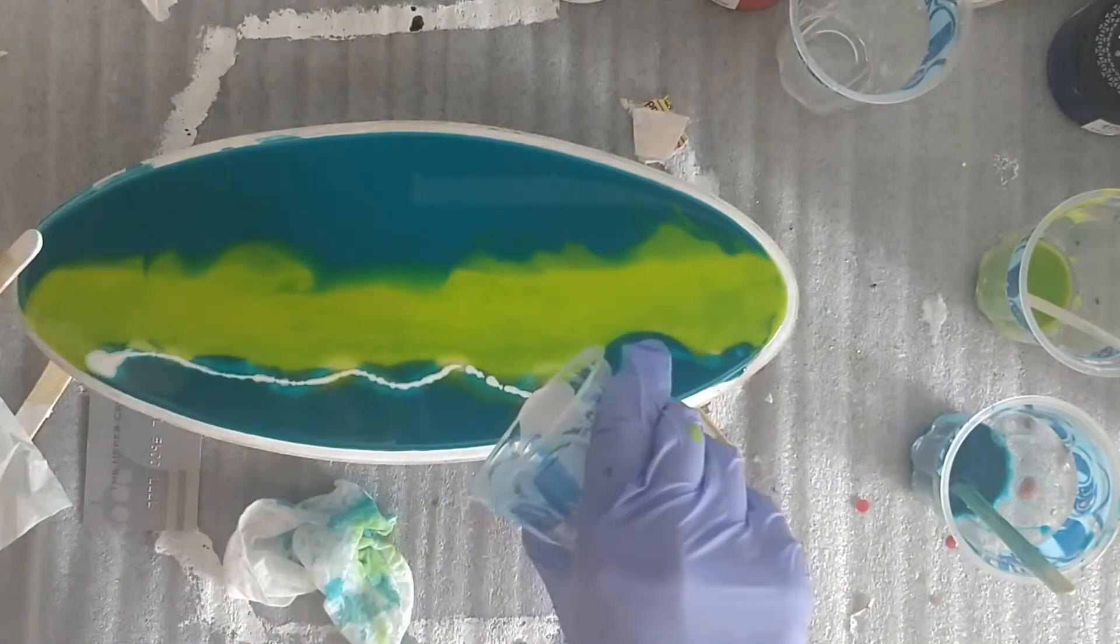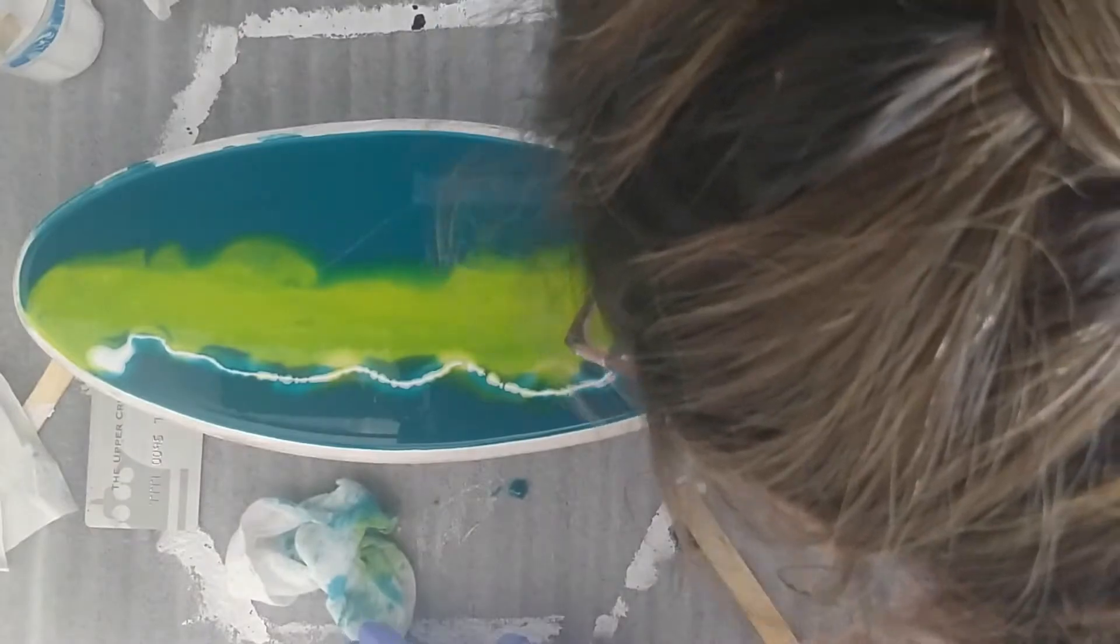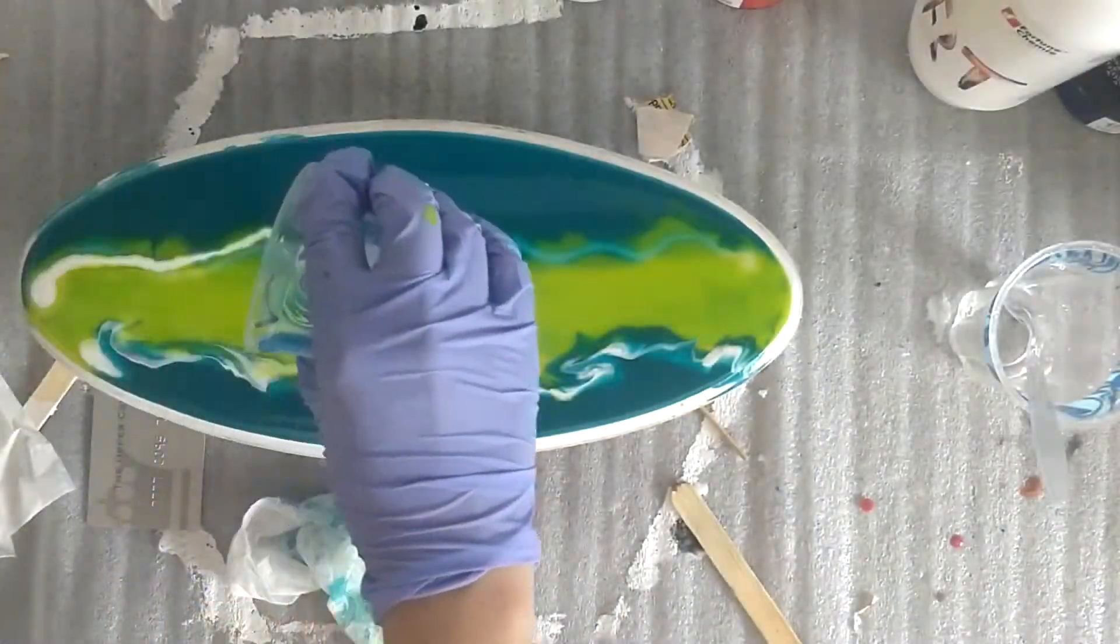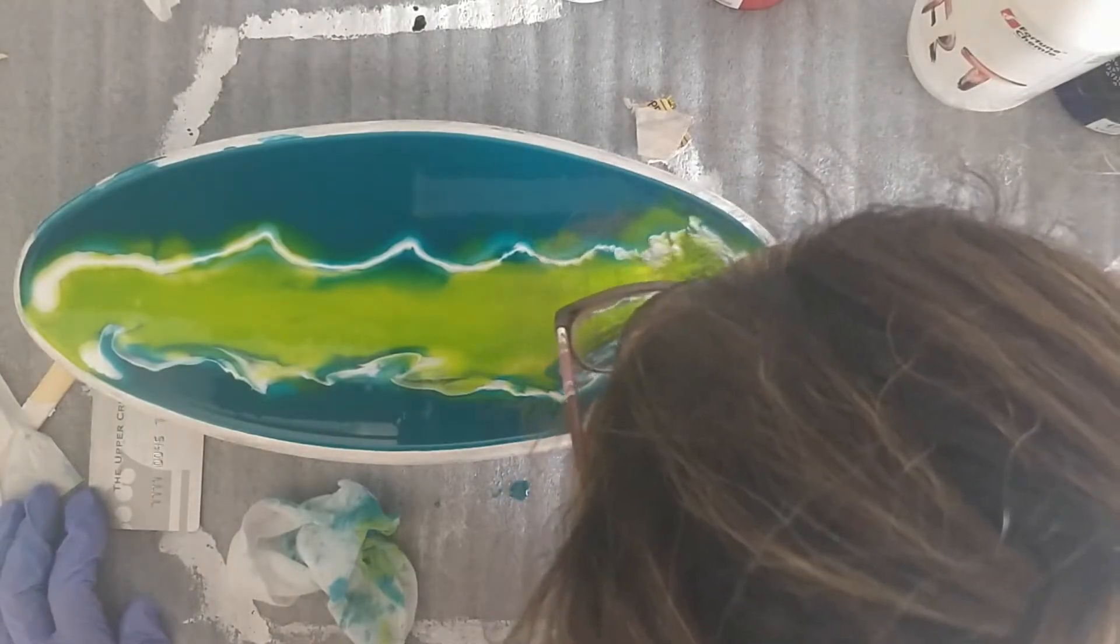Take the ultra white pigment and pour it where you wish to get the lacing effect. Now blow the white resin with your mouth. You can also use a straw as well but I prefer to blow it directly. I am really sorry for getting my head in between but it was impossible to get the lacing without popping my head in the video.